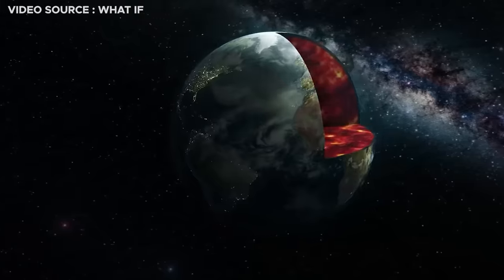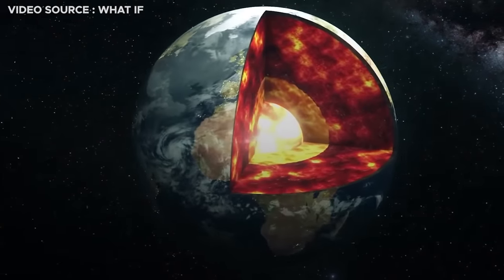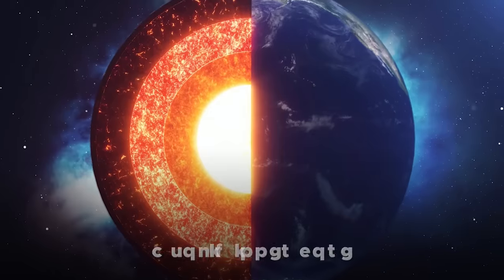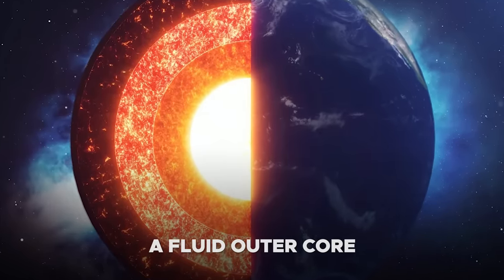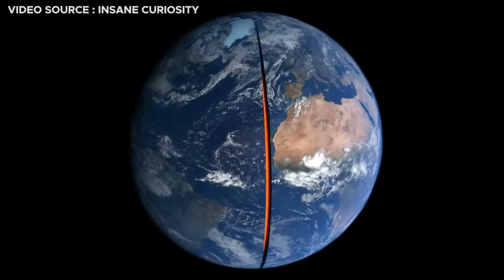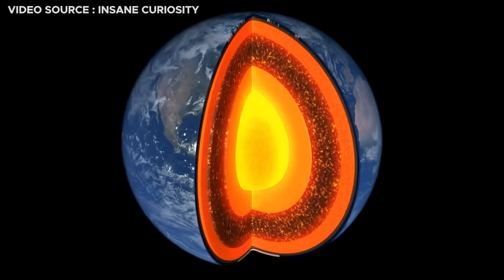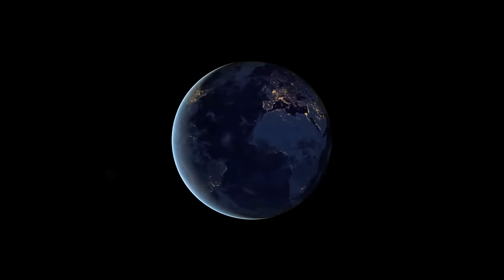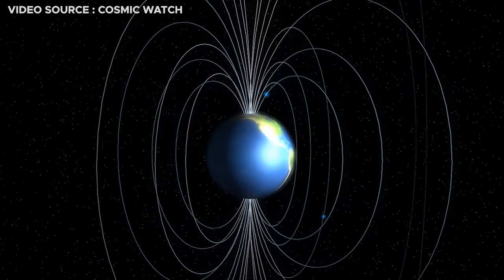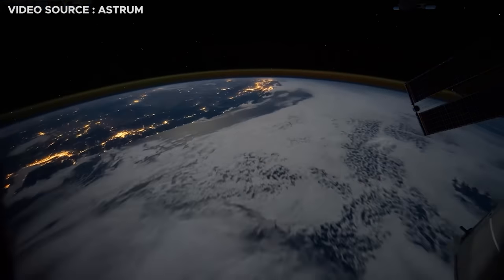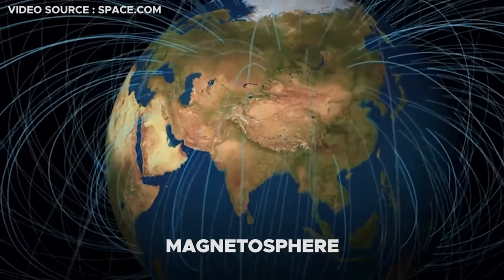To answer these questions, we must first venture into the Earth's core. The Earth's core consists of two components: a solid inner core and a fluid outer core. The outer core, predominantly composed of iron and nickel, remains in a perpetual state of turbulent motion. This dynamic movement, combined with the Earth's rotation, produces electric currents within the liquid metal. These currents, in turn, generate a magnetic field that extends well beyond the planet's surface into space, forming what we recognize as the magnetosphere.